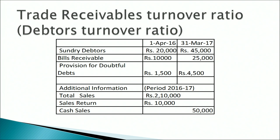Let us look at the calculation of debtors turnover ratio. In this illustration, the year given is 2016-17, from 1st April 2016 to 31st March 2017. Opening sundry debtors are 20,000 and closing sundry debtors on 31st March 2017 are 45,000. Figures for bills receivable and provision for doubtful debtors for both dates are also given. Additional information for 2016-17: total sales are 2,10,000, sales returns are 10,000, and cash sales are 50,000.